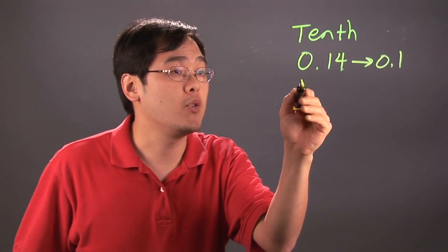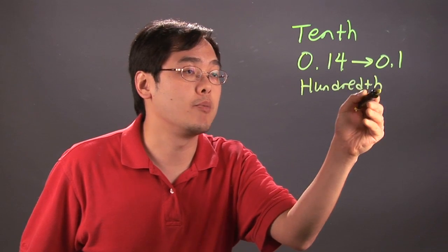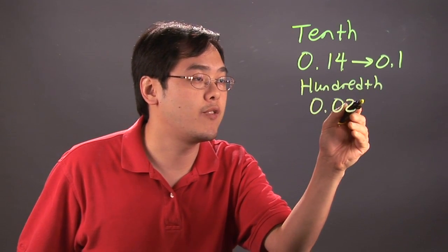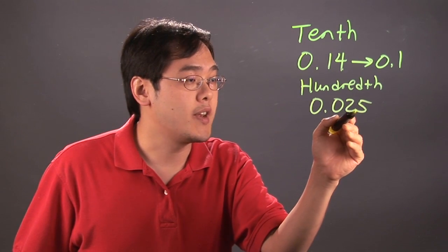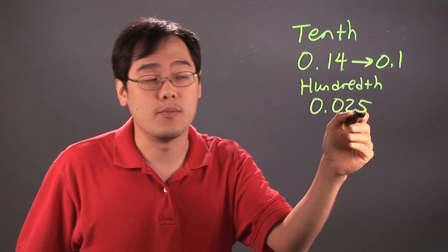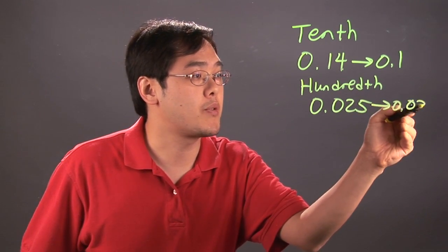Now, if you have hundredths, then you're rounding to two decimal places. So if you have 0.025, for example, you look at the next decimal place, which is the five, and then since that's five or more, this becomes 0.03.